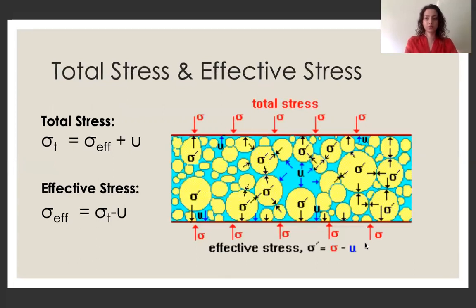So first let's look at the relationship between total stress and effective stress. So if you look at this diagram, the total stress is everything in this rectangle. So the accumulated forces acting on the soil. And the big yellow circles are the soil particles. And then the pore water pressure is the blue state, which is in between the soil particles.